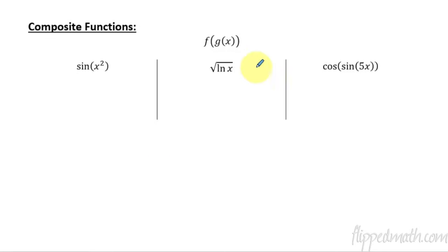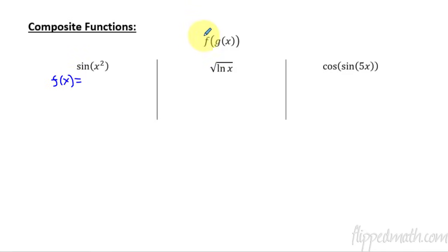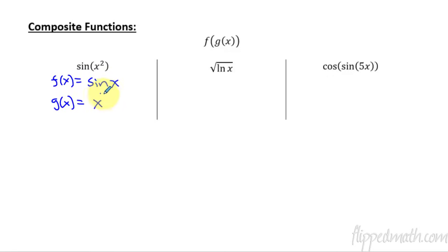A composite function is just a function inside of another function. Here are three quick examples — we've been doing this for a while before you ever had calculus. For the first one, let's recognize what the outside function is. In this case, the f of x on the outside would just be a regular sine x, and then the function on the inside, the g of x, would be x squared.